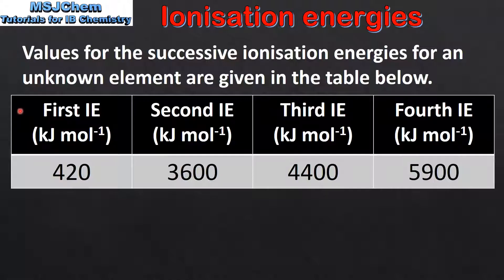In this table we have values for the successive ionization energies for an unknown element. The first ionization energy is 420 kJ per mole. We then see a large increase to the second ionization energy, which is 3600 kJ per mole. We then see a gradual increase for the third and fourth ionization energy values.